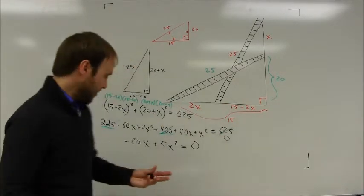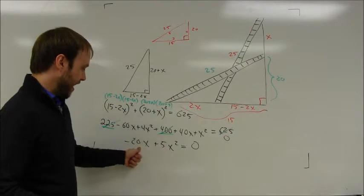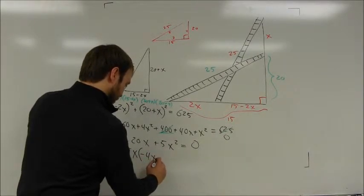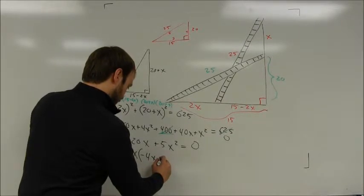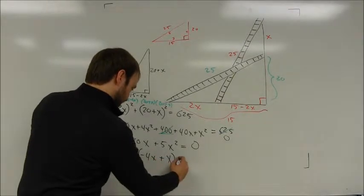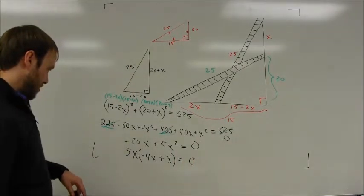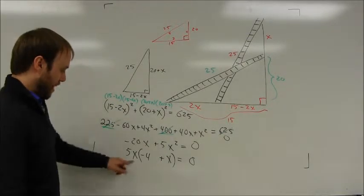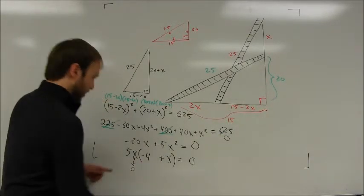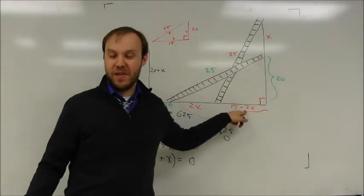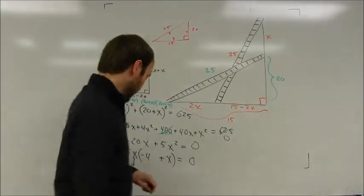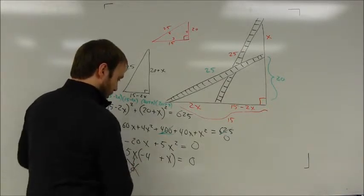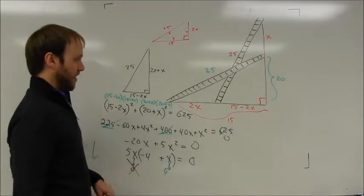This is a quadratic. Notice that I have a greatest common factor. I can divide 5x out of both sides of my equation. And that leaves me with x times negative 4 plus x equals 0. So either x is equal to 0, which doesn't really mean anything there. It would just basically mean that I'm leaning it straight up against the wall. So the answer doesn't make a whole lot of sense. Meanwhile, x could be equal to 4 from the second part of the equation.